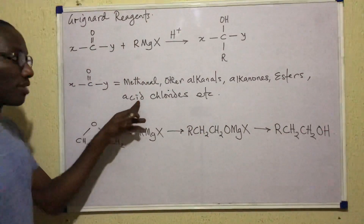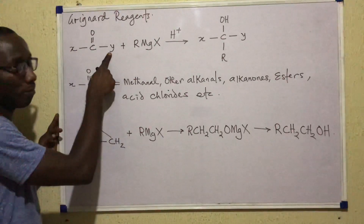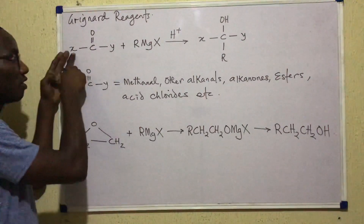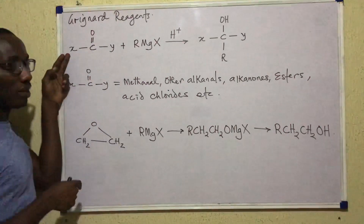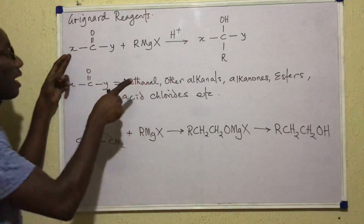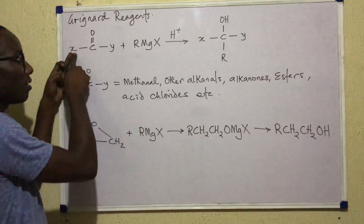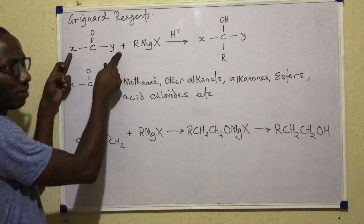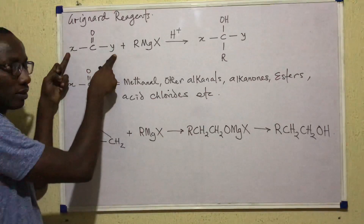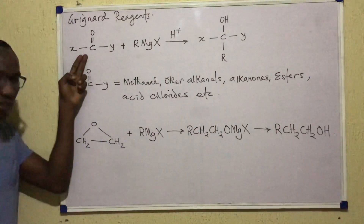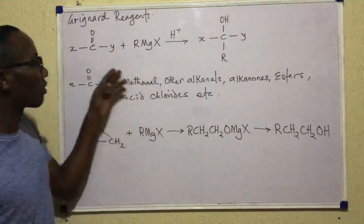For methanal, X and Y are both H. For other alkanals, the general formula is R-CHO. For alkanones it's R-CO-R, for esters R-CO-OR, and for acid chlorides R-CO-Cl. All of these compounds fit into the general structure X-C=O-Y.